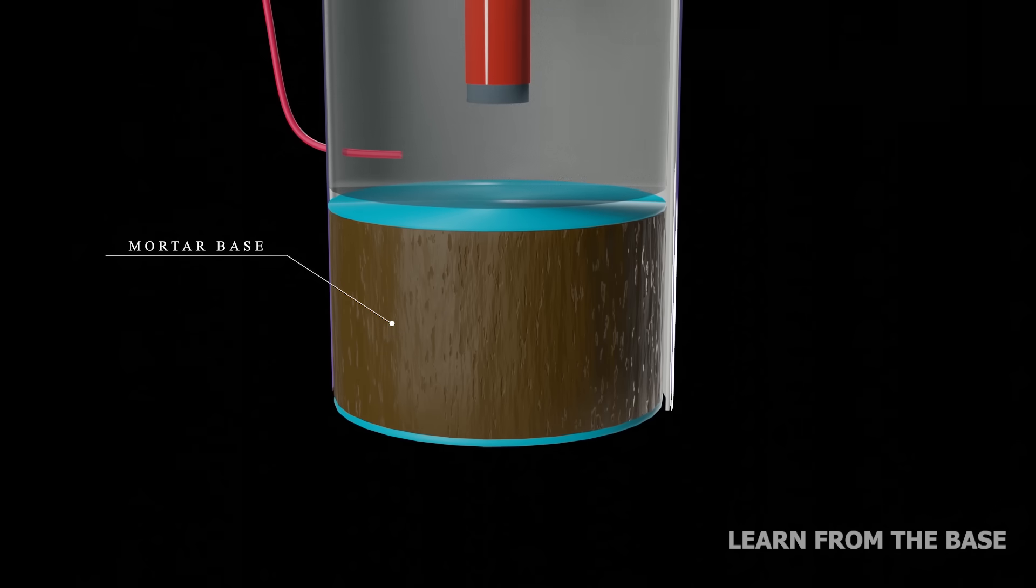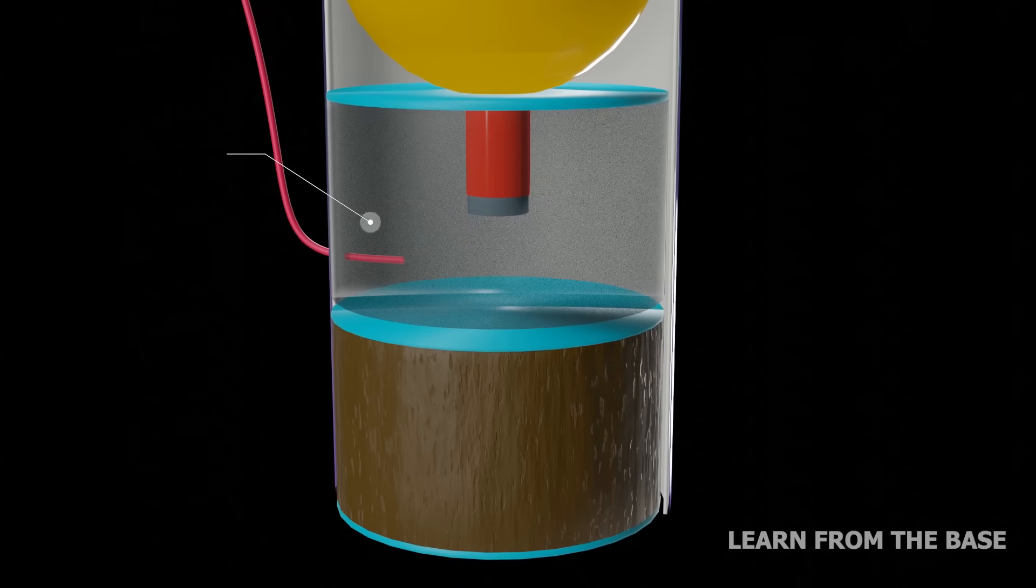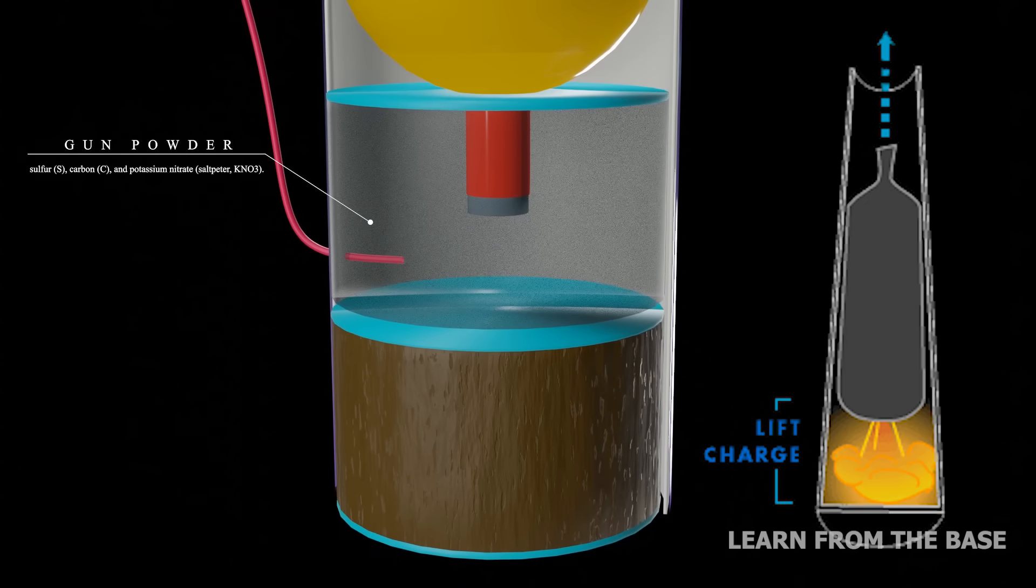This is the base layer of the mortar. It is made up of clay. This is the layer of gunpowder. This layer is also known as the lifting charge.